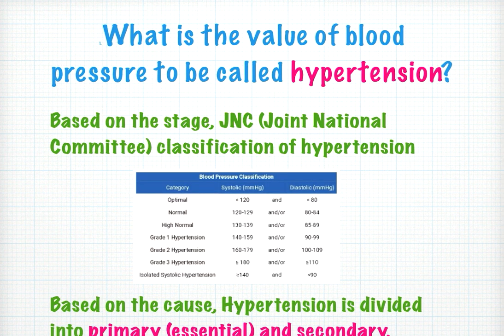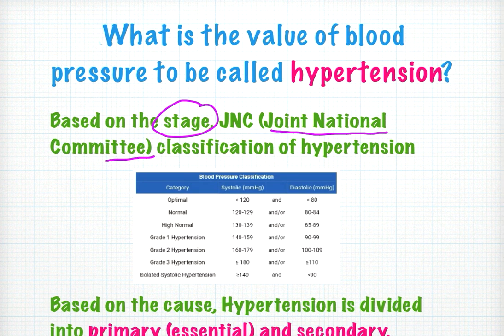The first question is: what is the value of blood pressure to be called hypertension? You need to refer the JNC criteria, or Joint National Committee criteria, which classifies hypertension based on stage. According to that, hypertension is 140 mmHg and above for systolic and 90 mmHg and above for diastolic.